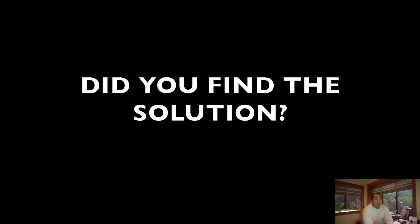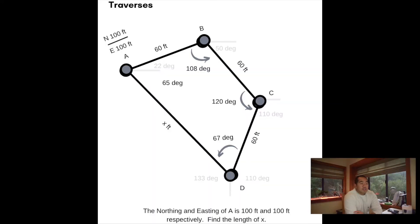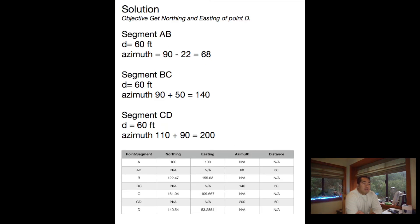Solution right here. The objective was to get the northing and easting of point D and we're going to go segment by segment. So segment AB we have a distance of 60 feet, and if we look at the azimuth angle, it's basically we pretend to draw a vertical for point A straight up. We can see that that angle of point A is 90 degrees, and so we know the azimuth angle of AB is just 90 minus 22.